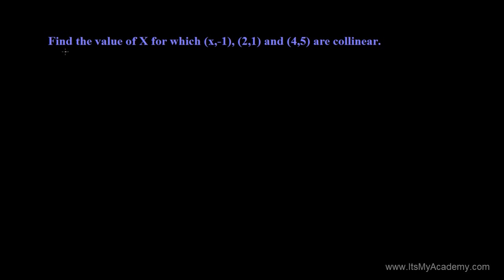Here we have a very interesting question: find the value of x for which the points (x, -1), (2, 1), and (4, 5) are collinear. We need to find the value of this unknown quantity x. We'll solve this with the help of the slope of a line, since we've been continuously learning about slopes.